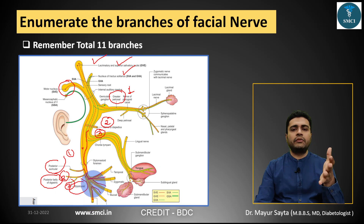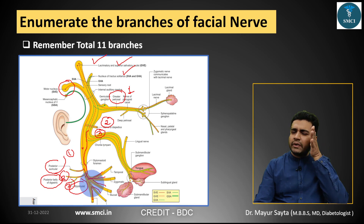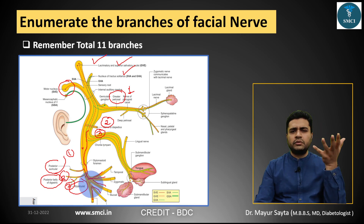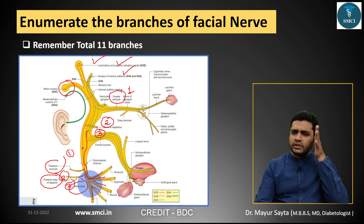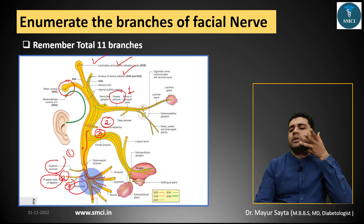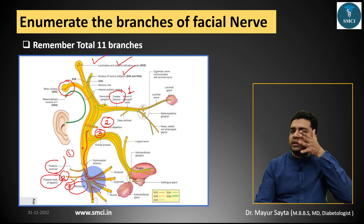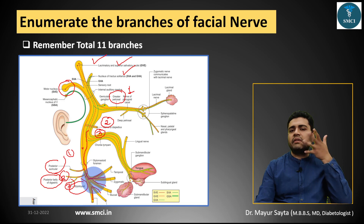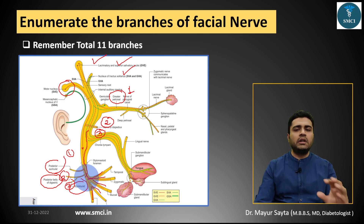After the stylohyoid, the nerve gives two divisions and then five terminal branches. Rather than memorizing them, remember them by direction of fibers: temporal, zygomatic, buccal, marginal mandibular, and cervical — towards the neck. That's how we remember all 11 branches of the facial nerve to enumerate in a case presentation.